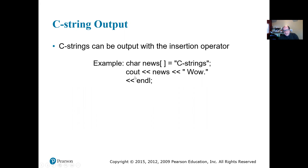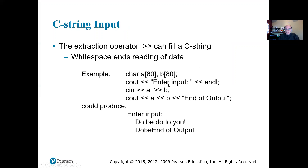We can do a cout on a C string as long as it has that backslash-0 in there somewhere. We can also do a cin. Remember, we could not do this with regular arrays — if it's a regular array, we cannot do cin or cout on them. But if it has that backslash-0 null character, we can do cin and cout with the C string.